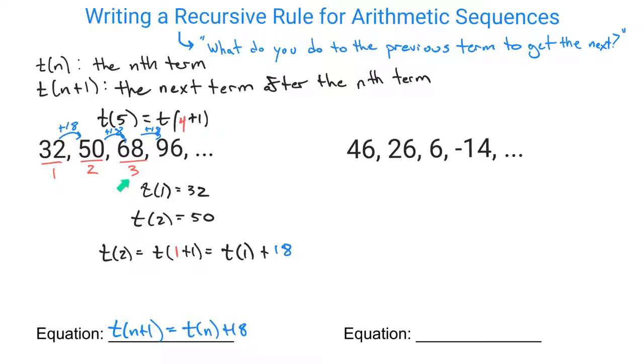So to get the third term, you're adding 18 to the second. To get the second term, you're adding 18 to the first term. So that's what I mean the next and the one before it. So t(n+1) and t(n). Of course, you do always have to have that statement telling everybody where you start to make sure that everybody's on the same page.